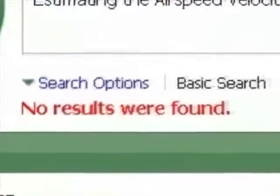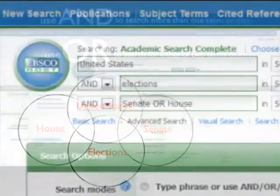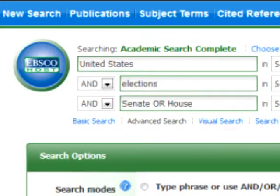You may also want to use OR when you search for related terms. For example, you can broaden your previous search by searching for United States AND Elections AND Senate OR House.